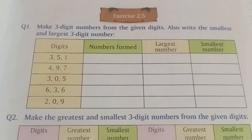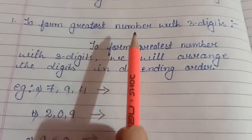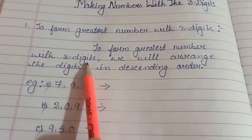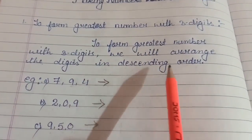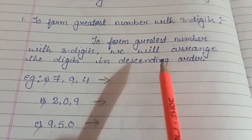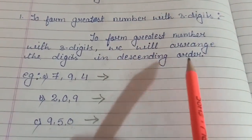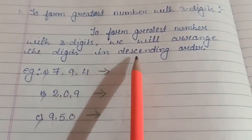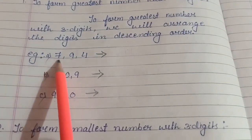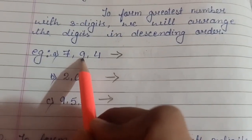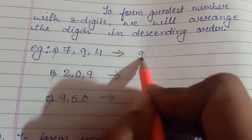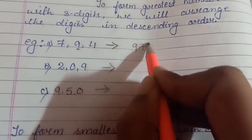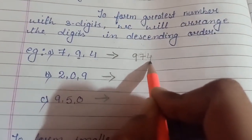First we will learn to form the greatest number with three digits. To form the greatest number with three digits, we will arrange the digits in descending order. Descending order means from the largest number to the smallest number, from big to small. So the digits are 7, 9, and 4. Nine is the biggest, so we write 9 first, then 7, then 4. So 974 is the greatest number.